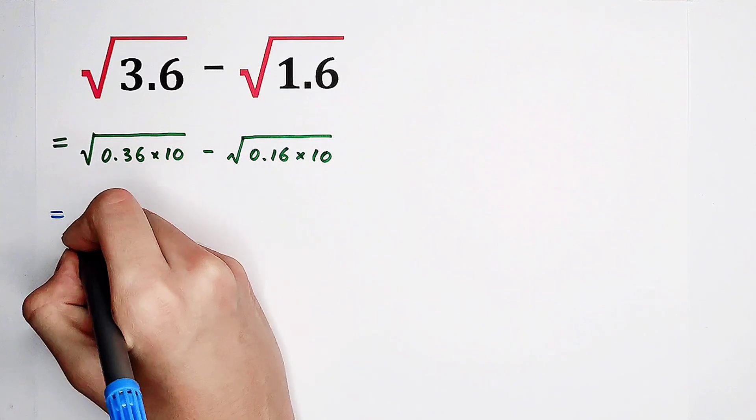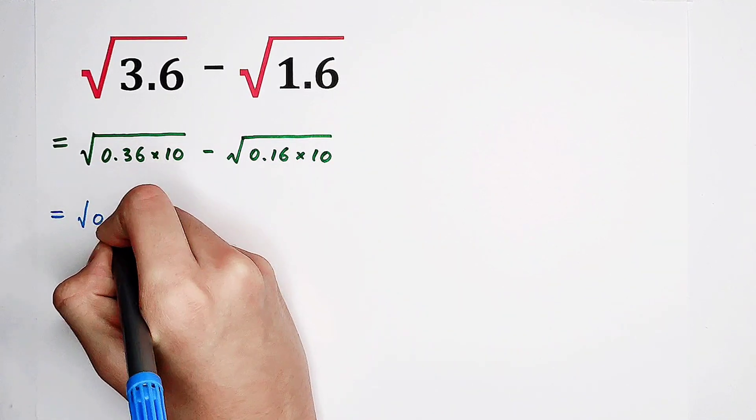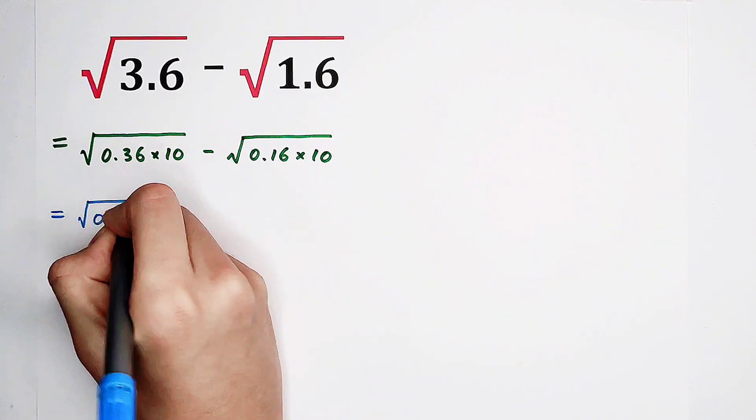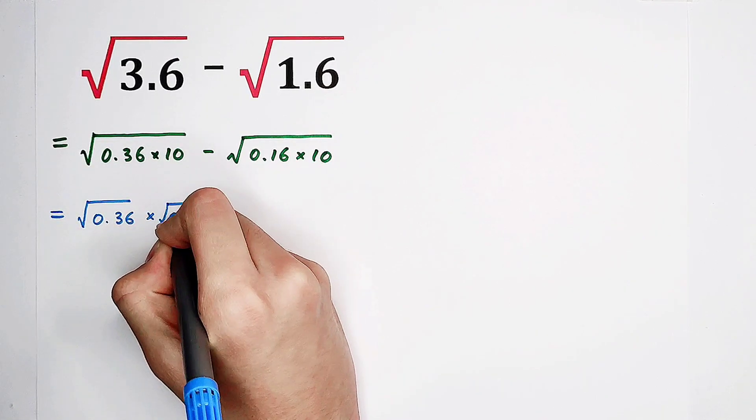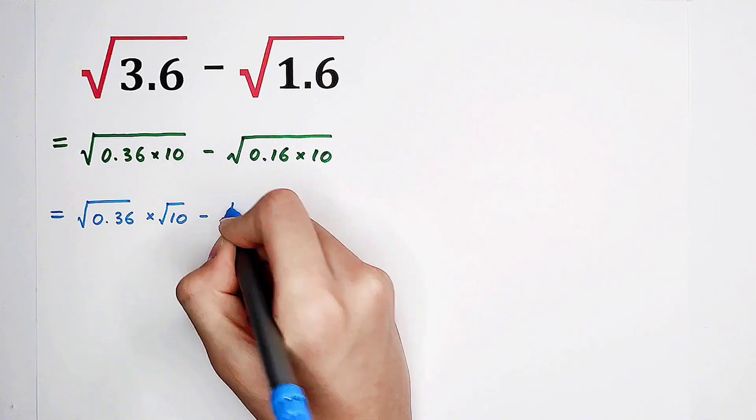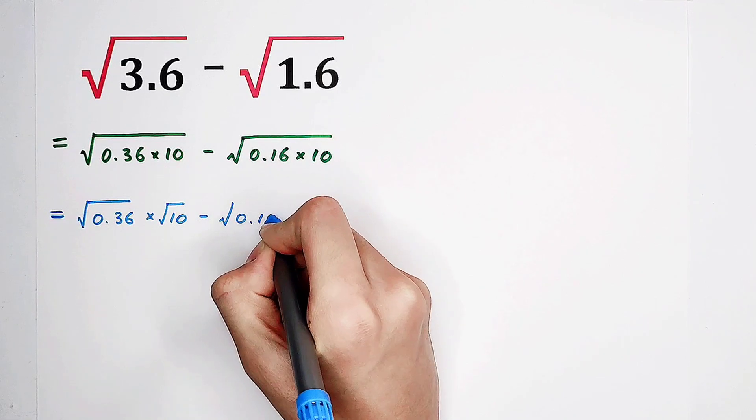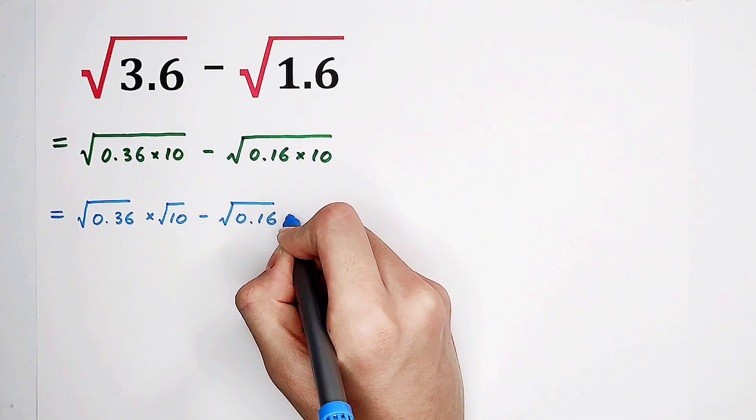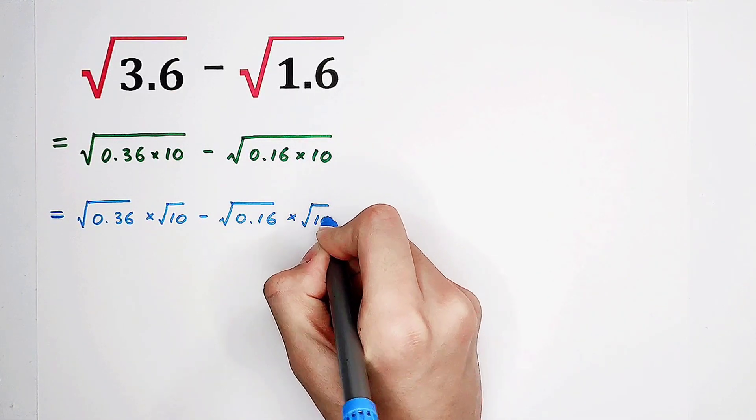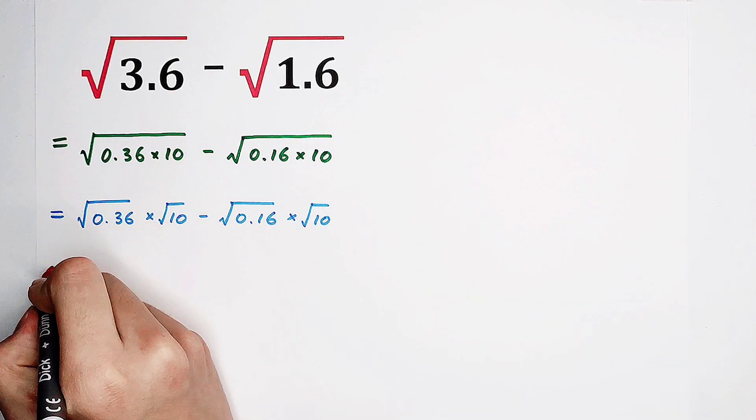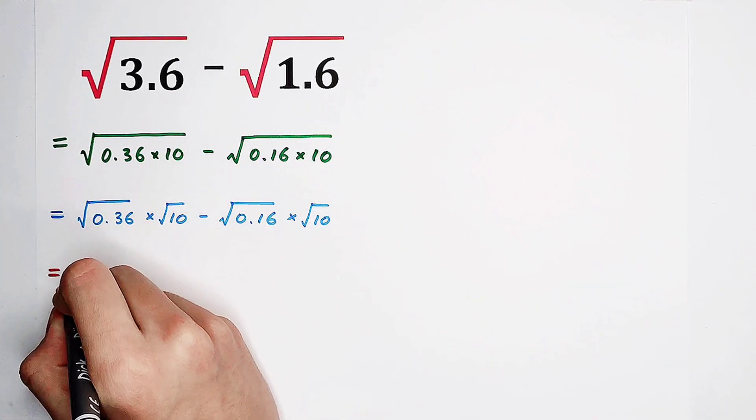And then, it is square root of 0.36 times square root of 10 minus square root of 0.16 times square root of 10. Then, of course, take out square root of 10.